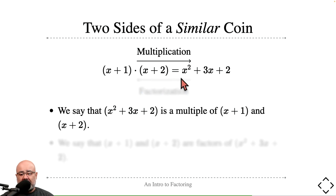We say the right-hand side, which is kind of like our 35, is a multiple of x+1 and x+2, because I can multiply x+1 by something to get this expression x²+3x+2. I can also multiply x+2 by something to get x²+3x+2.